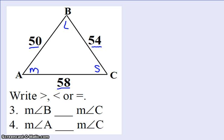So now let's look at this. For problem three, they want us to compare angle B with angle C. Well, angle B I have marked as the largest or the biggest angle. And angle C is the smallest one. So when I put in my inequality, remember the alligator is always hungry, wants to eat the biggest. So it looks like we are going to eat angle B. So we'll have measure of angle B is greater than the measure of angle C.